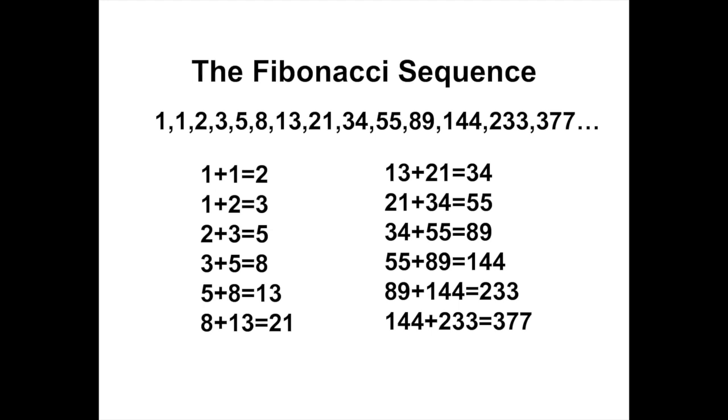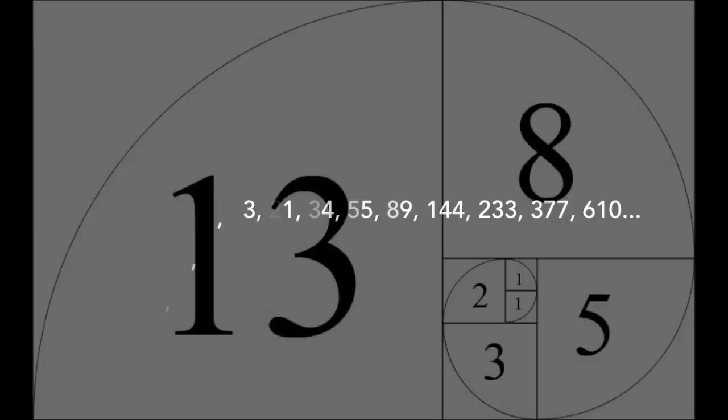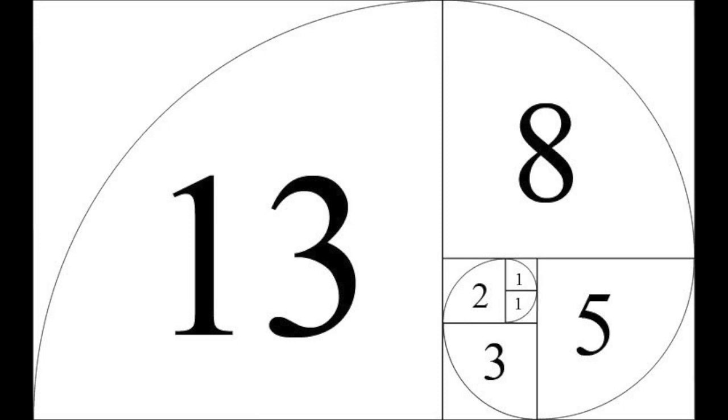The Fibonacci sequence can be put into a ratio, 1 to 1.618. This is called the golden ratio. So, how do these numbers fit into a picture of guys playing basketball, or any arc, for that matter? When you put the Fibonacci sequence into tiles and draw an arc from one side to another in each of the tiles, you get what's called the Fibonacci spiral.